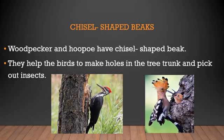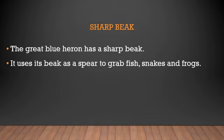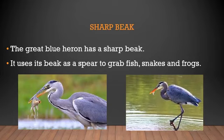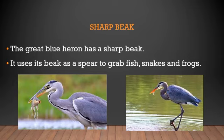Next is the sharp beak. The great blue heron is a bird that has a sharp beak. It uses its beak as a spear to grab fish, snakes, and frogs. Here is an example of the great blue heron — it has a sharp beak because it has to fish in the water, using the beak like a spear to grab fish, snakes, and frogs present in the water.